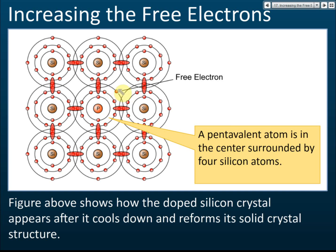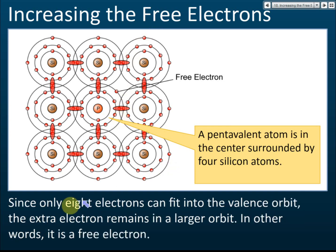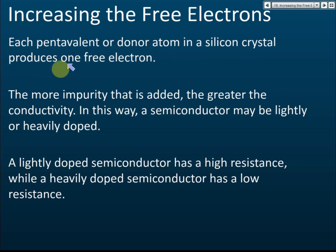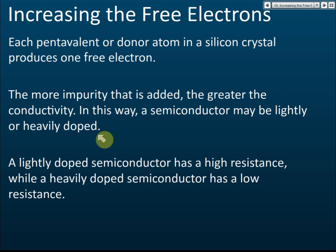If you add one phosphorus atom, you get one free electron. Add 100 phosphorus atoms, you get 100 free electrons; add 1 million, you get 1 million free electrons. Since only eight electrons can fit into the valence orbit, the extra electron remains in a larger orbit and becomes a free electron. Each pentavalent donor atom in the silicon crystal produces one free electron. The more impurity added, the greater the conductivity. In this way, a semiconductor may be lightly doped — very little impurity added.